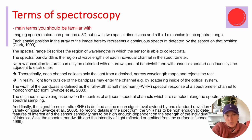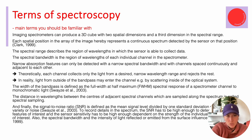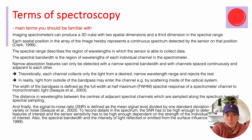Common terms: spectral range describes the region of wavelengths in which the sensor is able to collect data. Spectral bandwidth is the region of wavelengths of each individual channel in the spectrometer. In hyperspectral imaging, we want narrow absorption features to be detected, so we need narrow spectral bandwidth with channels that are spaced continuously and adjacent to each other. Theoretically, each channel collects only the light from a desired narrow wavelength range and rejects the rest.